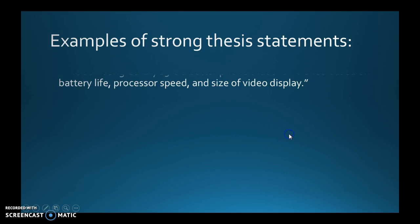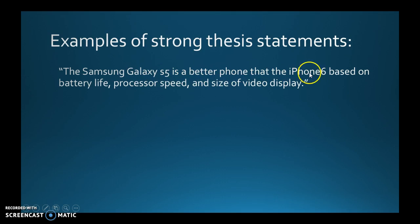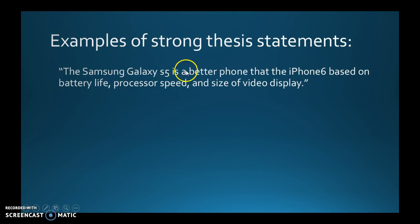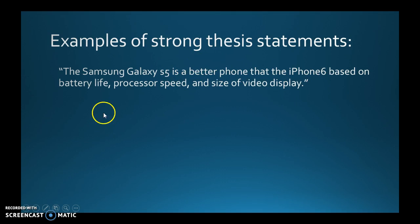Here's an example of a strong thesis statement: 'The Samsung Galaxy S5 is a better phone than the iPhone 6 based on battery life, processor speed, and the size of the video display.' We're comparing two things: Samsung Galaxy S5 and iPhone 6. We're saying one is better than the other. And we have three specific ways we're comparing them: battery life, processor speed, and size of the video display. That's the three required elements — the two subjects, the position, and the comparison points.